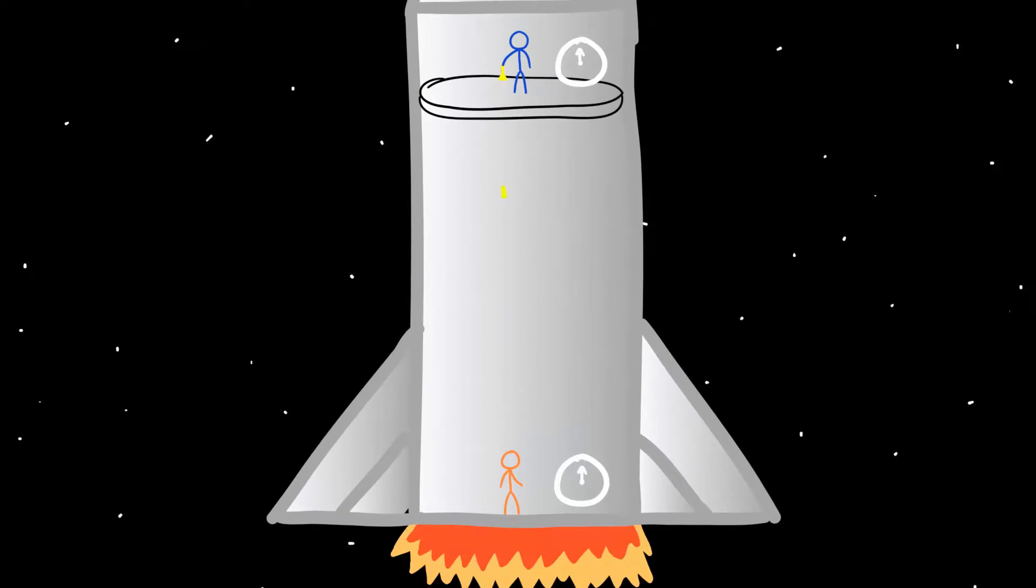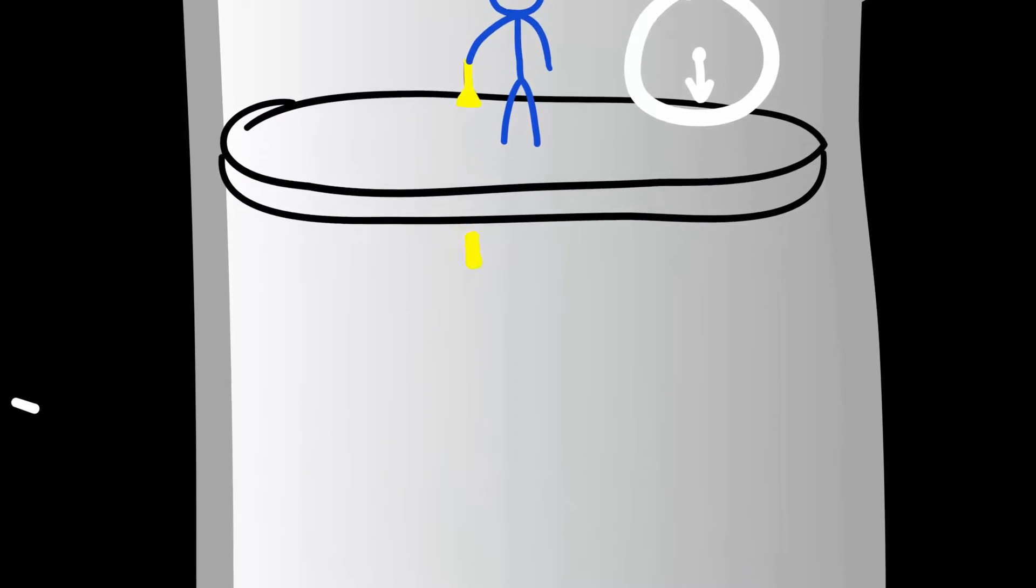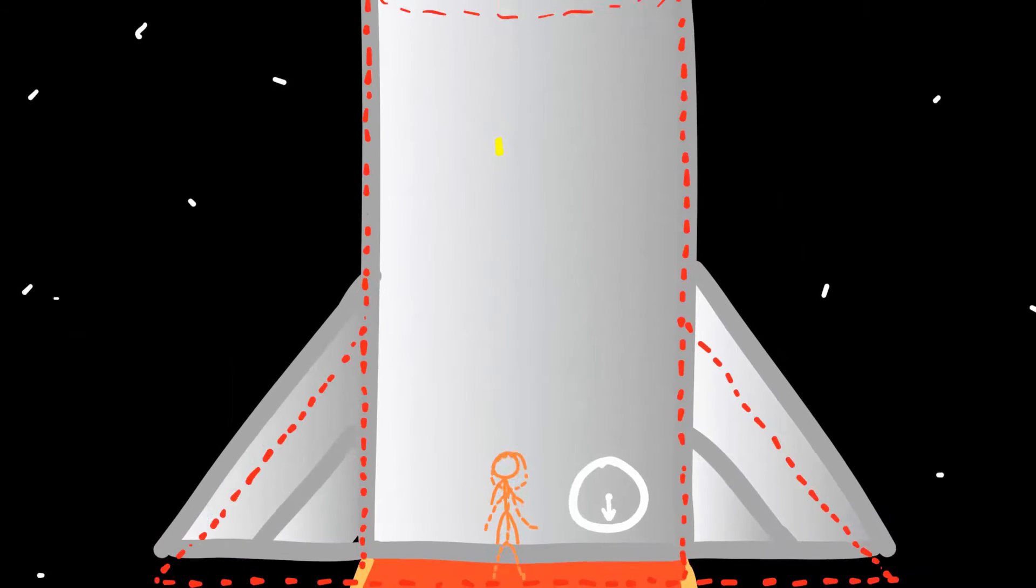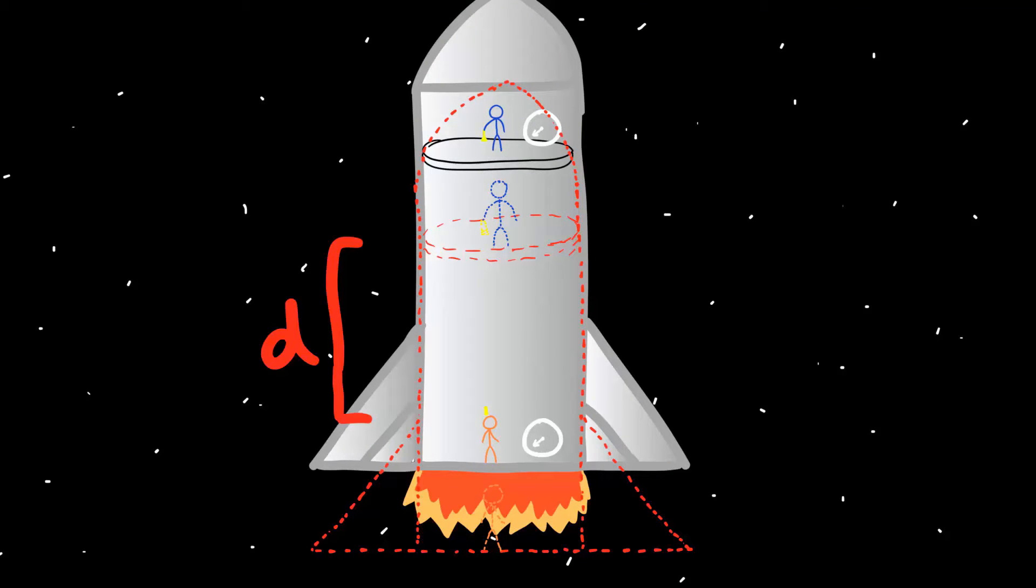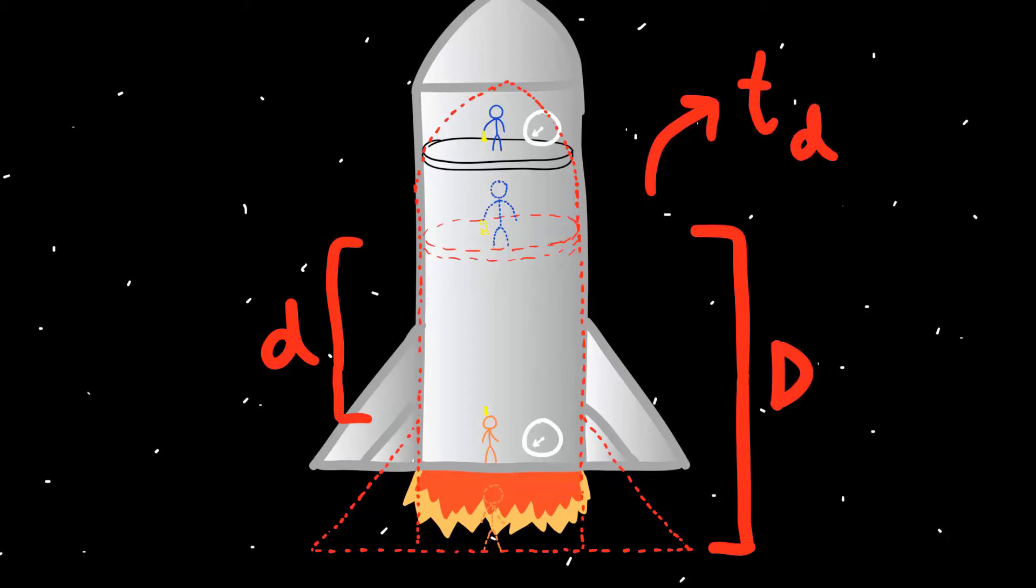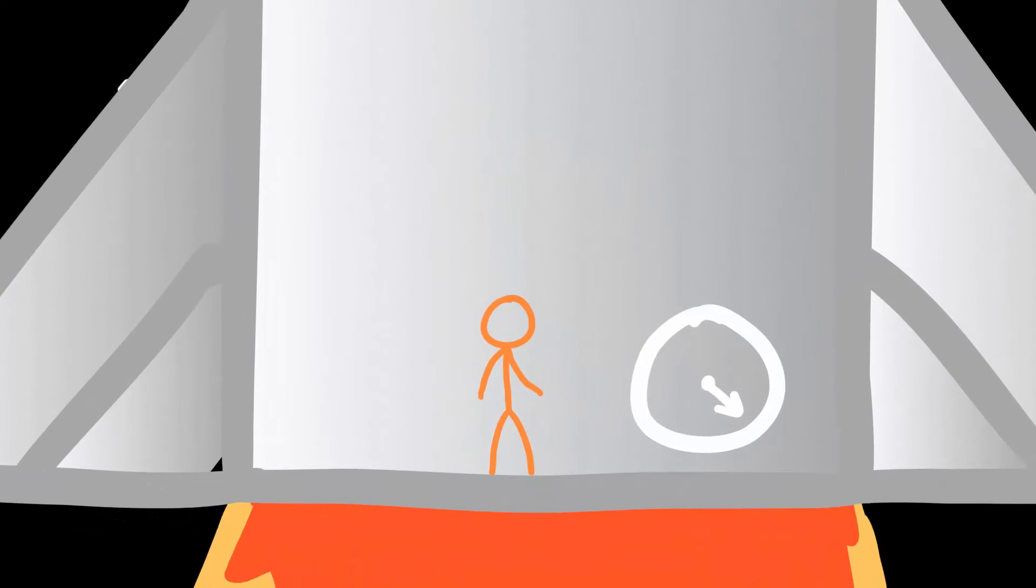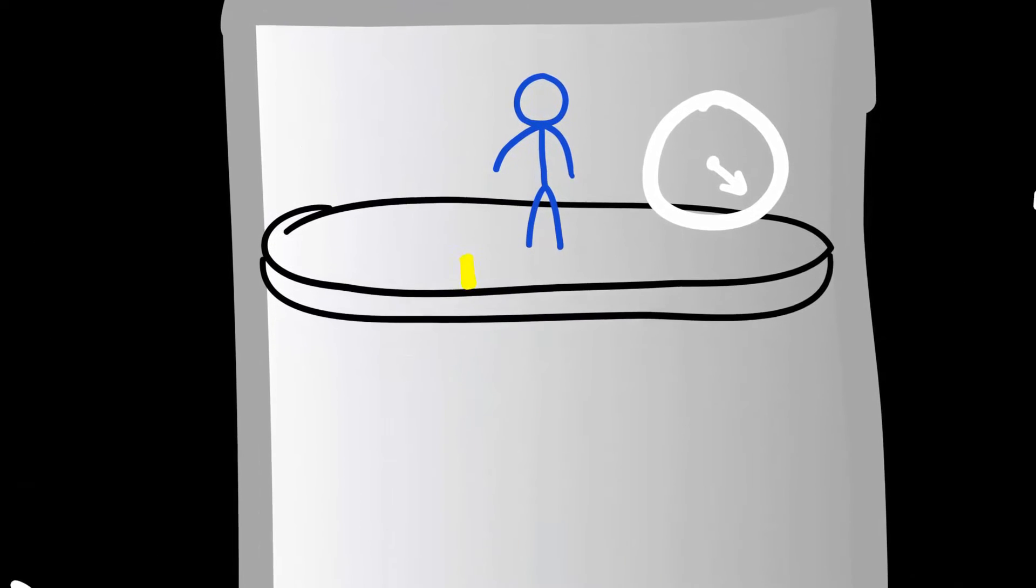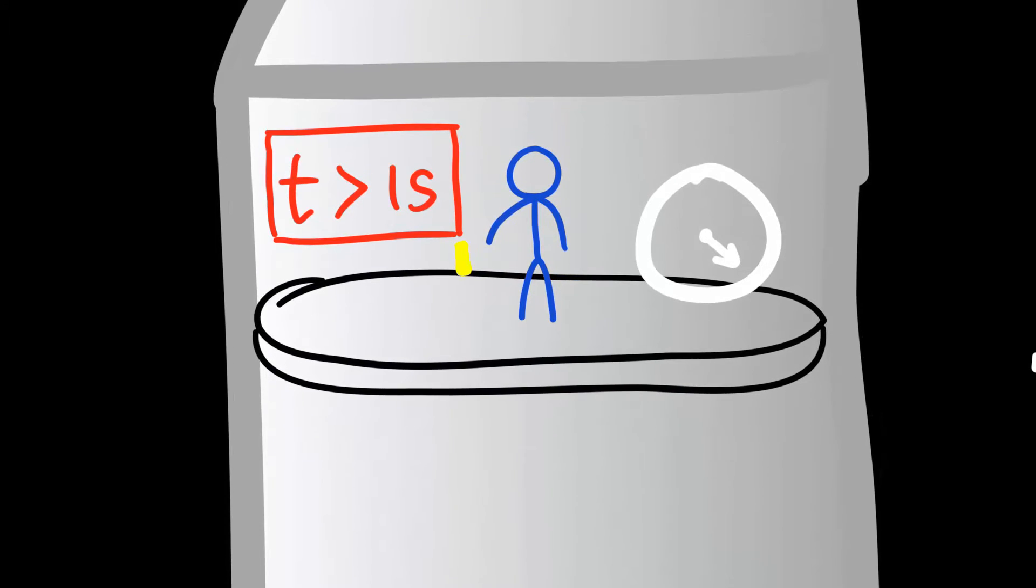But if the rocket is accelerating, the situation changes. During the instant the light pulse is sent, the distance between Sal and me is still D. But as the light moves towards me at a constant speed, I am being accelerated by the rocket towards it. So now the distance that light has to travel is less than D. So it's going to take less than a second to reach me. This happens for all the later pulses because the rocket has been accelerating all this time. If I'd send signals to Sal, they try to reach him but since he's accelerating away from the signal, light has to travel a distance more than D. So it'll take more than one second to reach him. Simple right?